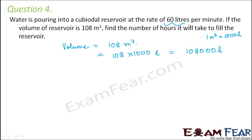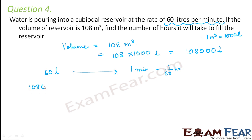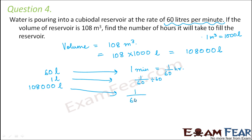The rate of water being poured is 60 litres per minute. For 60 litres, it takes 1 minute, which is 1/60 hour. So in 1/60 hour, 60 litres of water is poured. The entire reservoir holds 108,000 litres. Using the unitary method: for 60 litres, 1/60 hours; for 1 litre, 1/60 ÷ 60 hours; therefore for 108,000 litres, it takes 1/(60×60) × 108,000 hours.